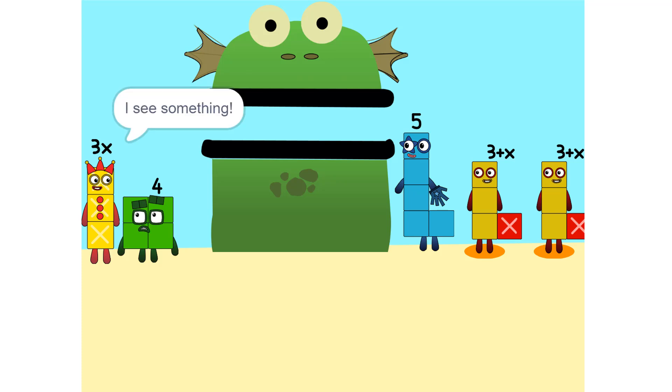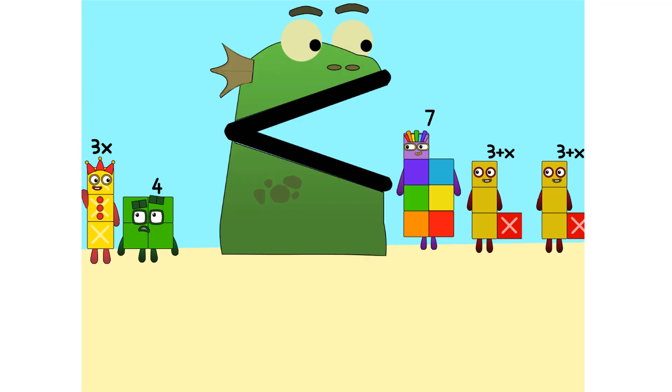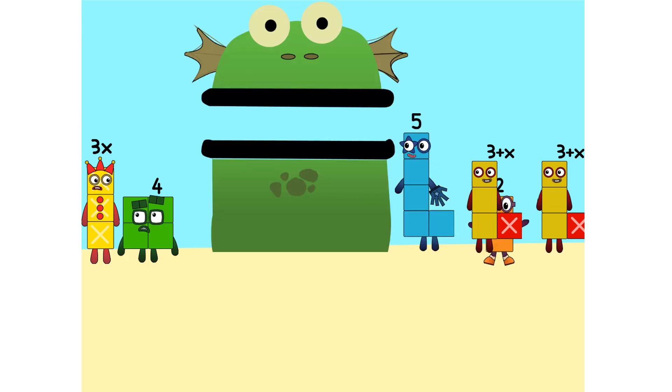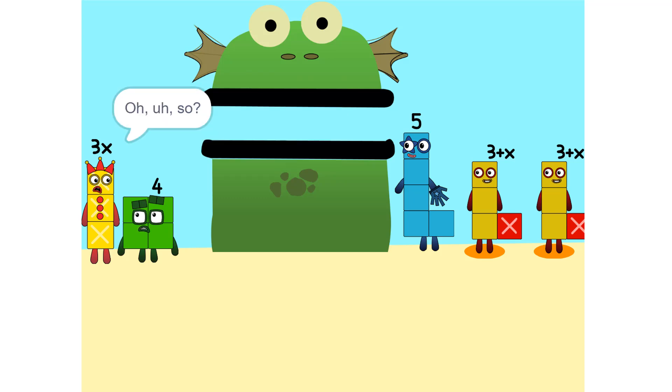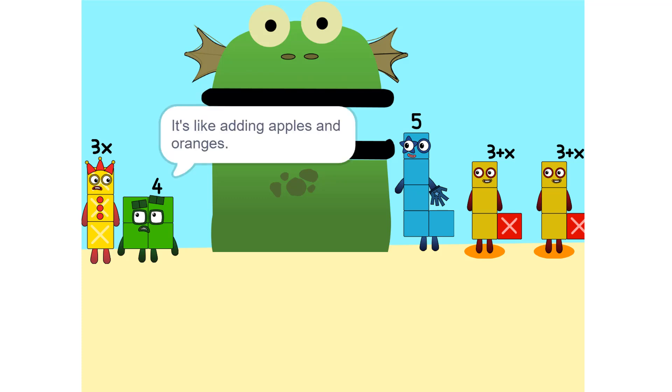I see something. We can add these. Why did that happen? Because the 2 is connected to the 3 plus X. Oh, so it's like adding apples and oranges.